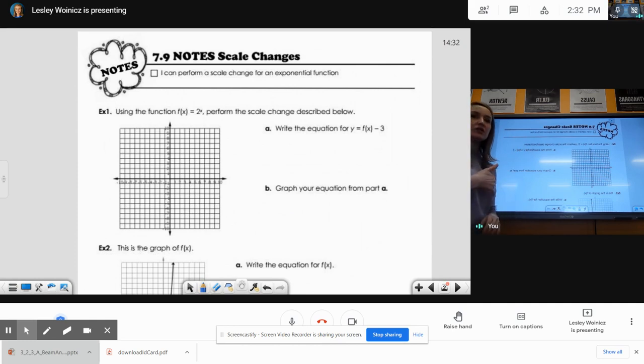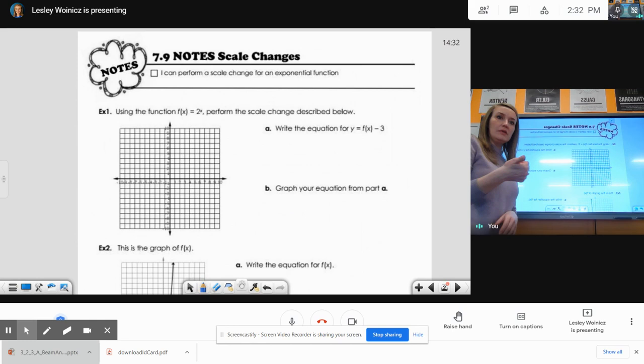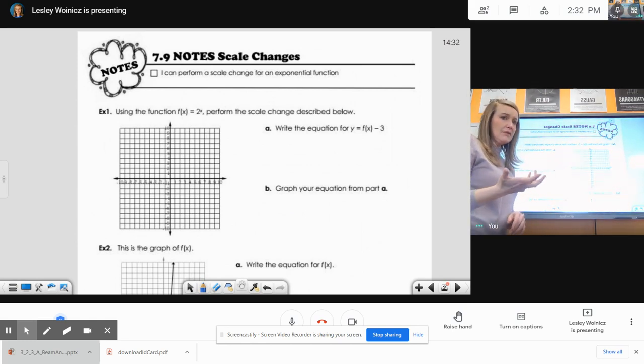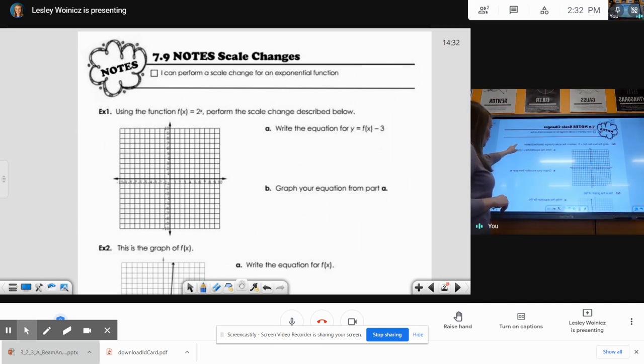And we did these scale changes in unit 4 for linear, we did them again in unit 5 for quadratics, so hopefully this kind of feels like a review. The scale change part is this rule right here, y equals f of x minus 3.